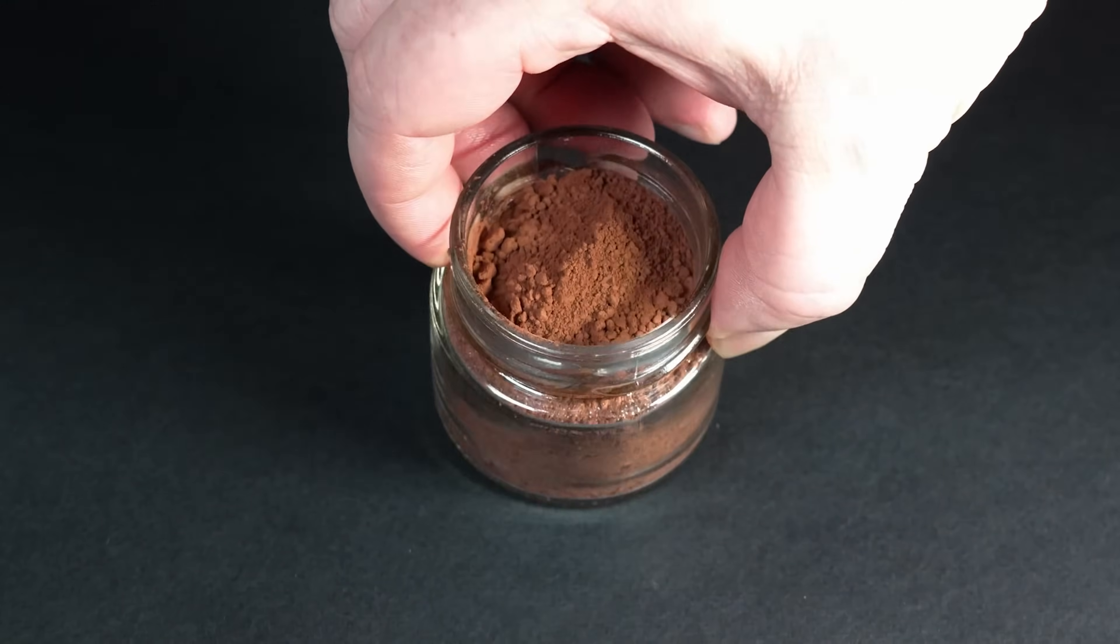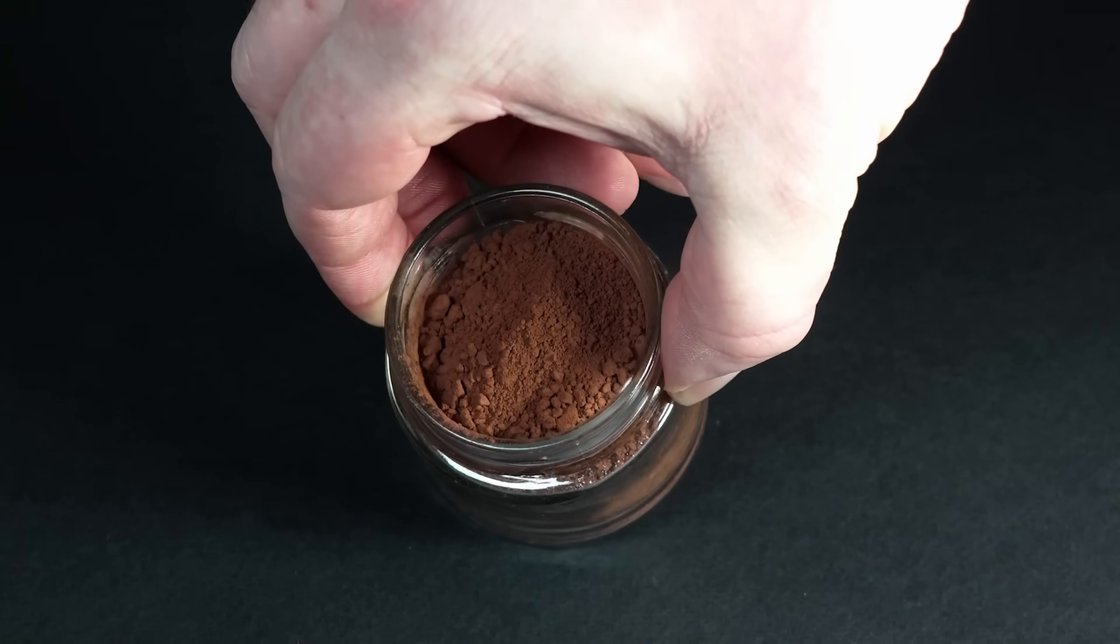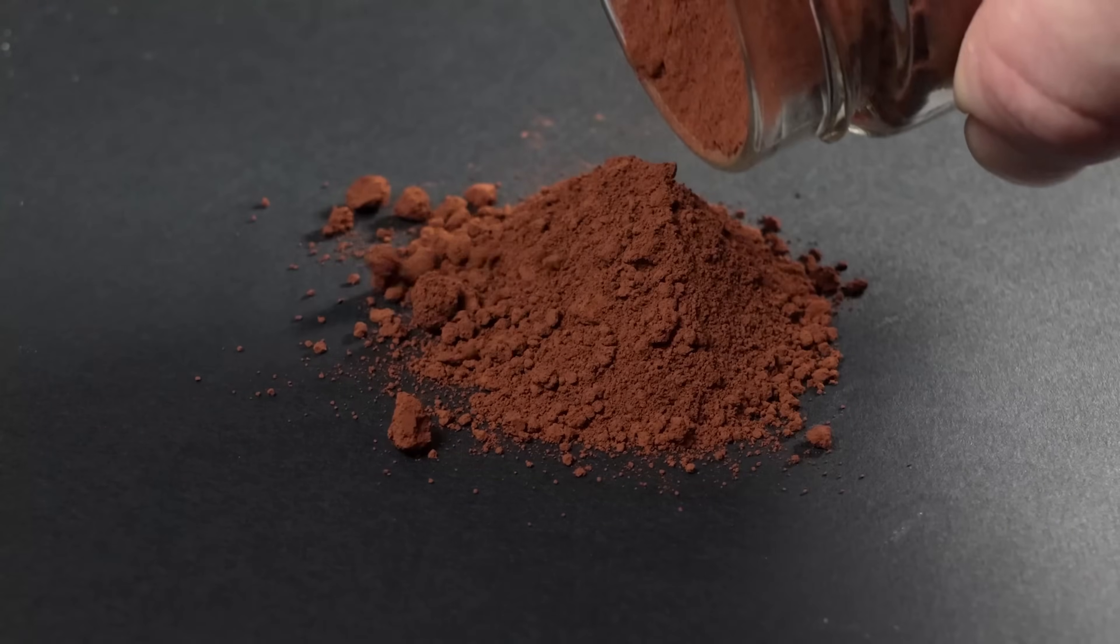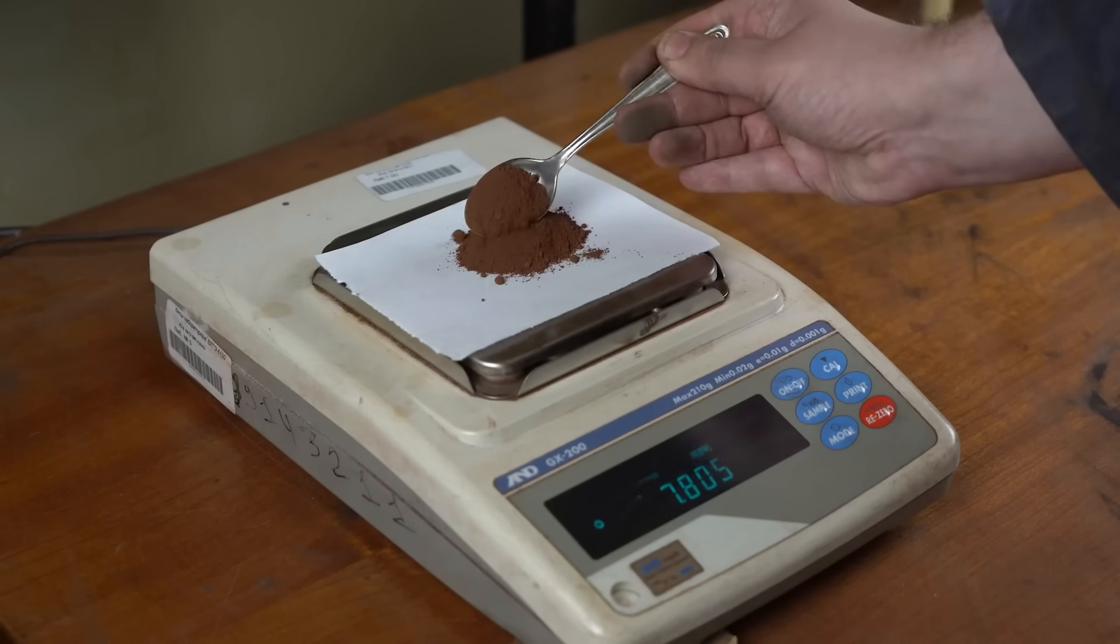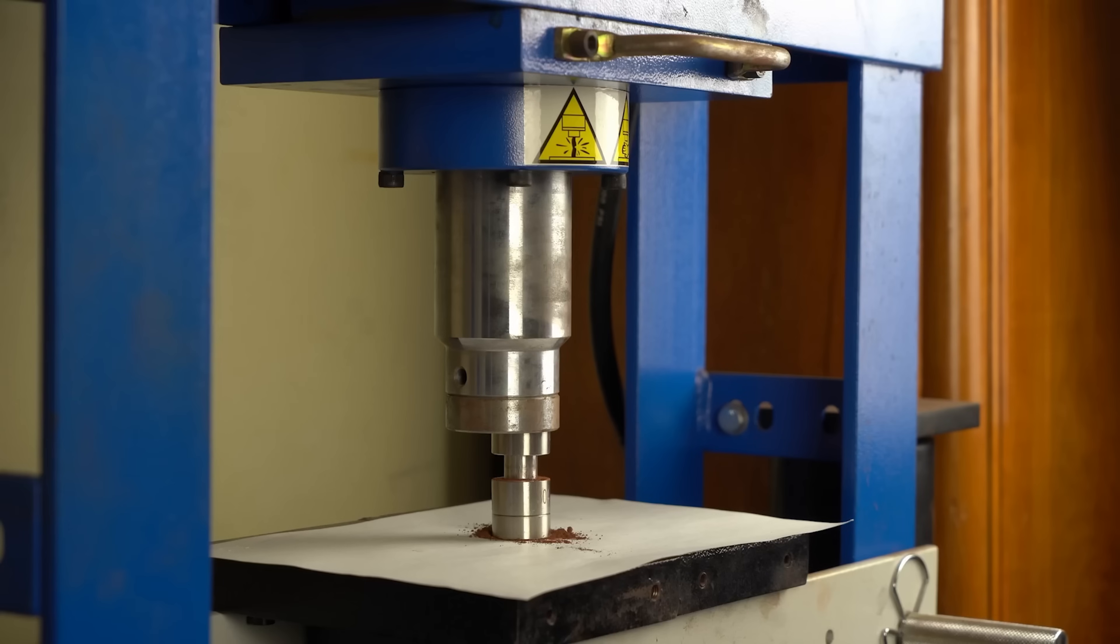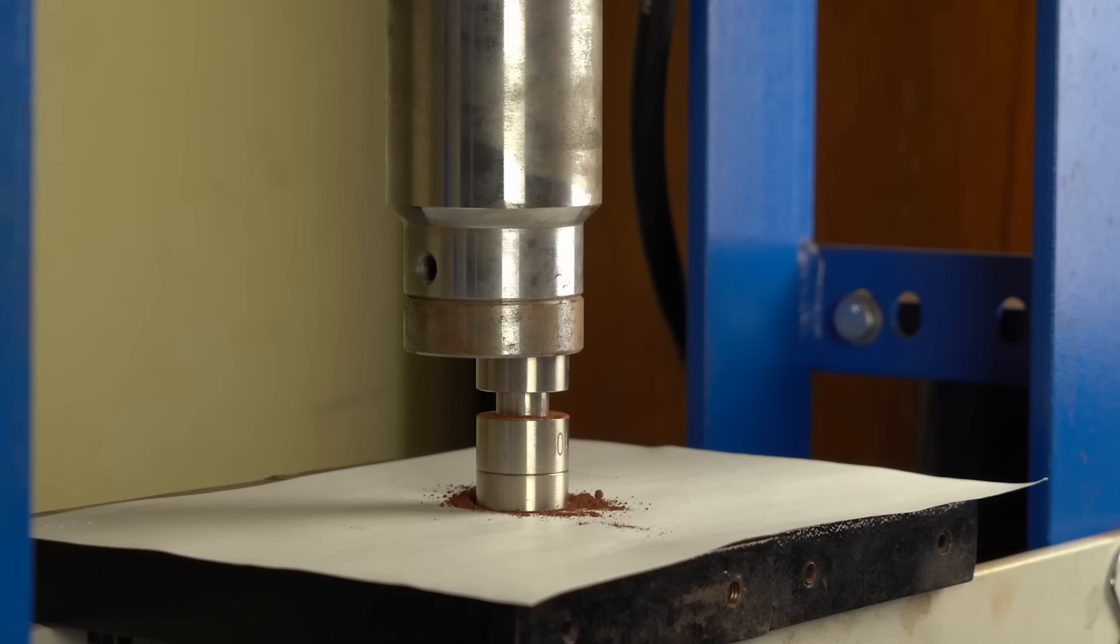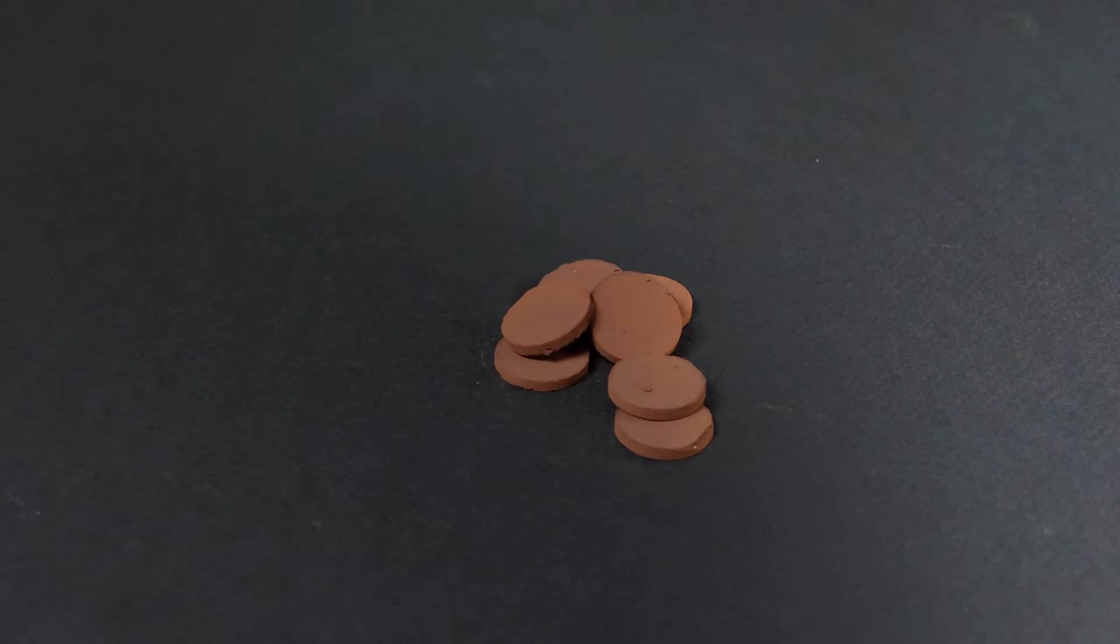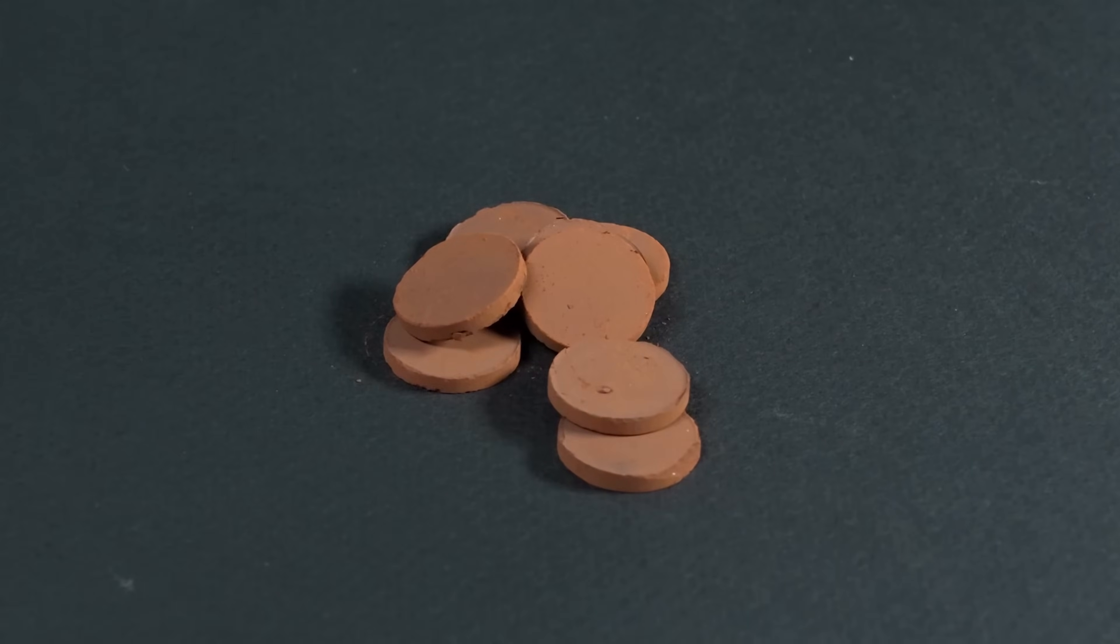To extract useful chemical elements from red sludge, the mud is first dried, so that it can be conveniently handled. After that, they weigh about 12 grams of red powder. Then, the weight amount is compressed under very strong pressure to obtain these tablets, which are much more convenient to work with than loose powder.